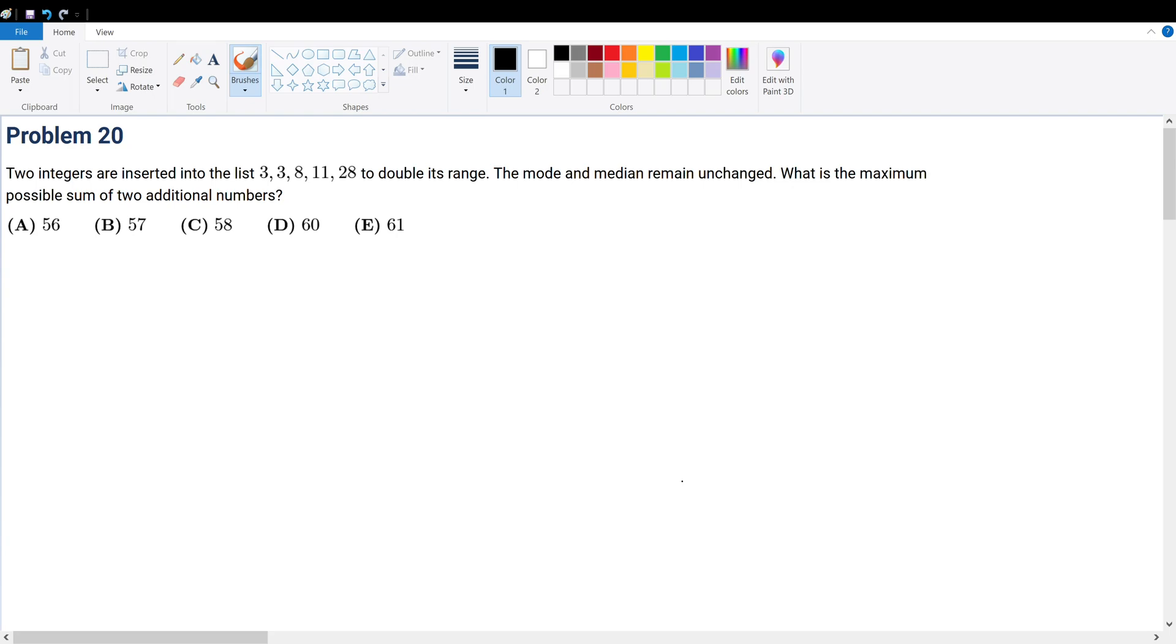So keep yourself organized and just reason your way through. That's what I do. I haven't done this question beforehand, and I just want to show you the raw mental process that I go through to solve this question. What is the range? That's the first information that we're given. When the two numbers are inserted, the range doubles. Well, the range is equal to max minus min.